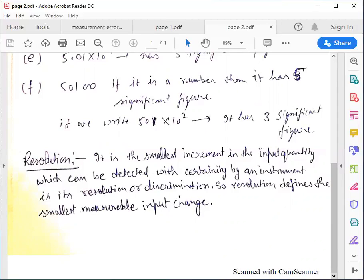So it means we can measure 0.1 centimeter. If we have 0.05 centimeter, we cannot measure that quantity with the scale. We cannot measure 0.15 centimeter with scale.